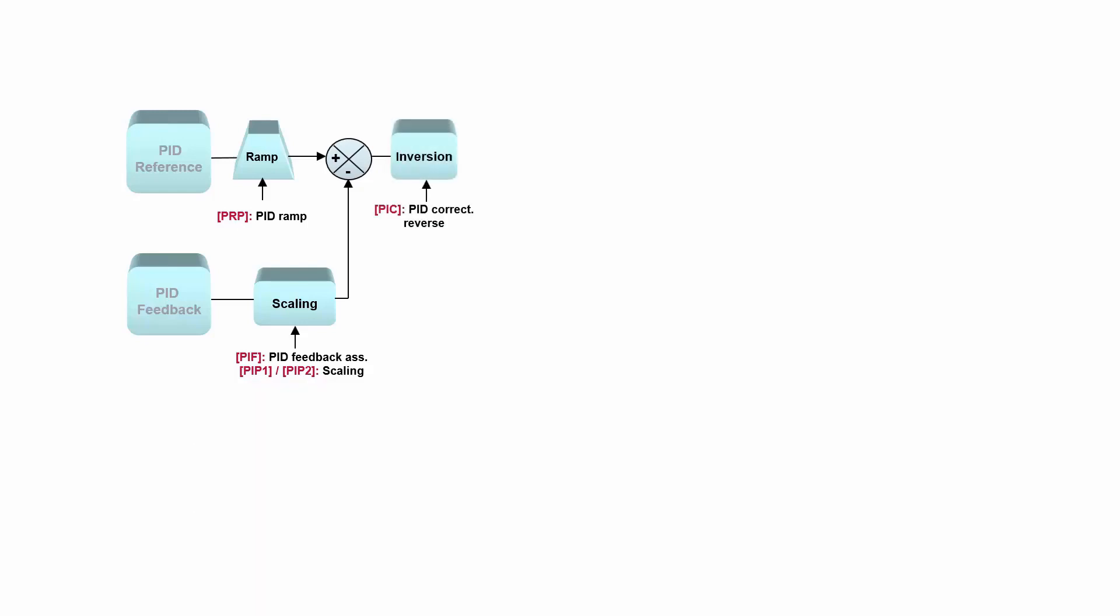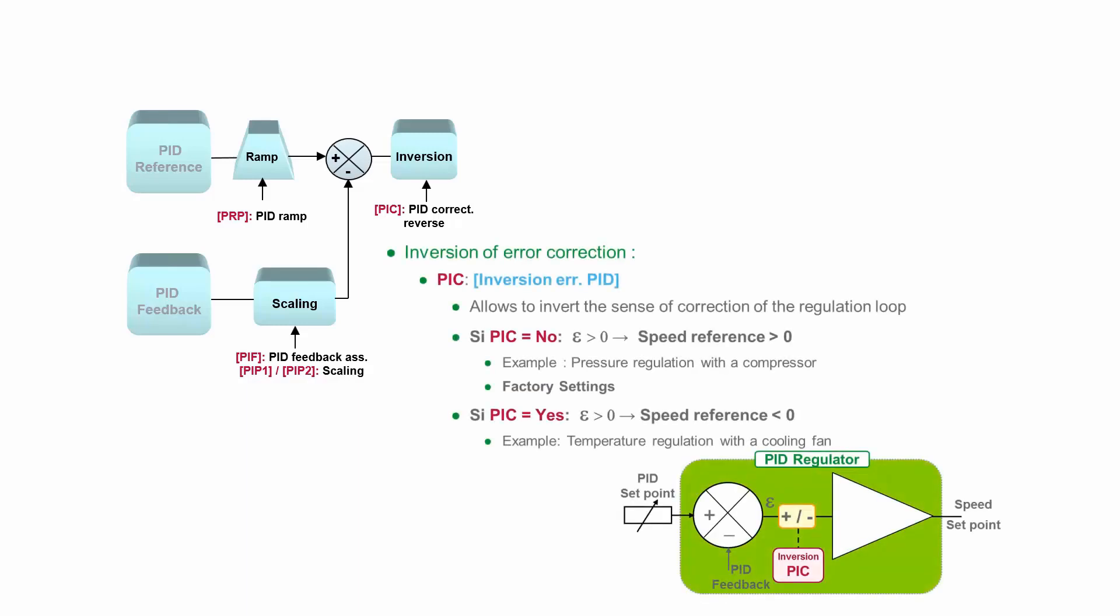After that we have error correction, and the first step of error correction is the possibility to make inversion. Why would we need inversion? For example, if you have some compressor which is regulating the pressure, then you will not inverse error correction.